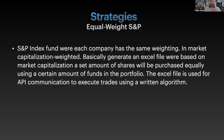Now going into some of the strategies I've learned. The equal weight S&P strategy basically distributes all stocks in the S&P 500 equally — an index fund where each company has the same weighting. It generates an Excel file where, based on market capitalization, a set amount of shares would be purchased equally using a certain amount of funds. The algorithm gathers data, generates the Excel file, sends it to the custodian, who then executes the trade at lightning-fast speed — that is the benefit of algorithms.